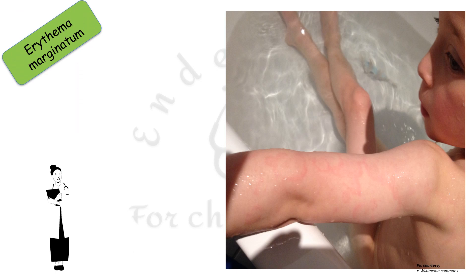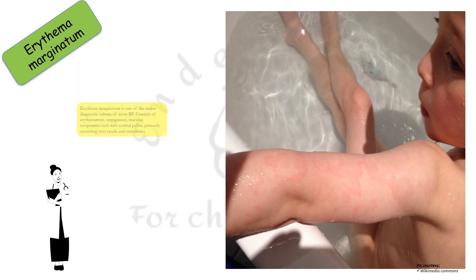Erythema marginatum, as seen in the picture, is one of the major diagnostic criteria of acute rheumatic fever. It consists of erythematous, serpiginous, macular, non-pruritic rash with central pallor, primarily occurring over the trunk and extremities.